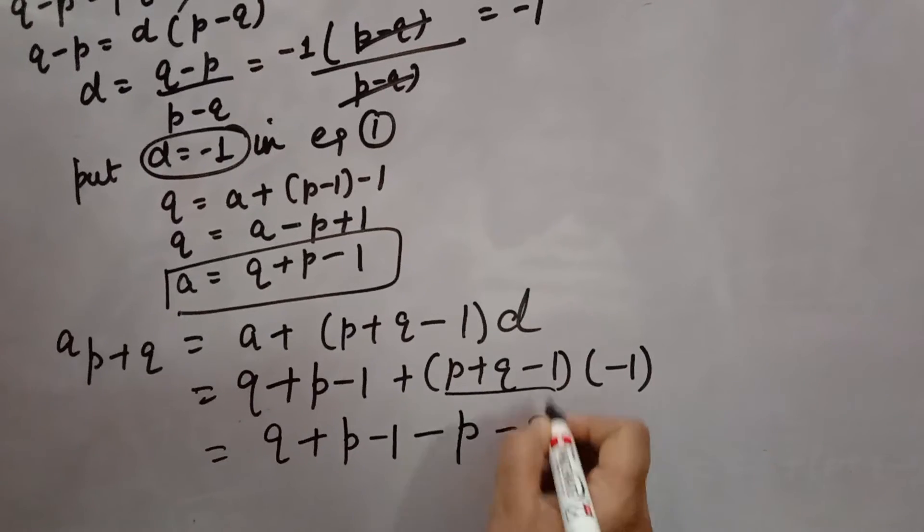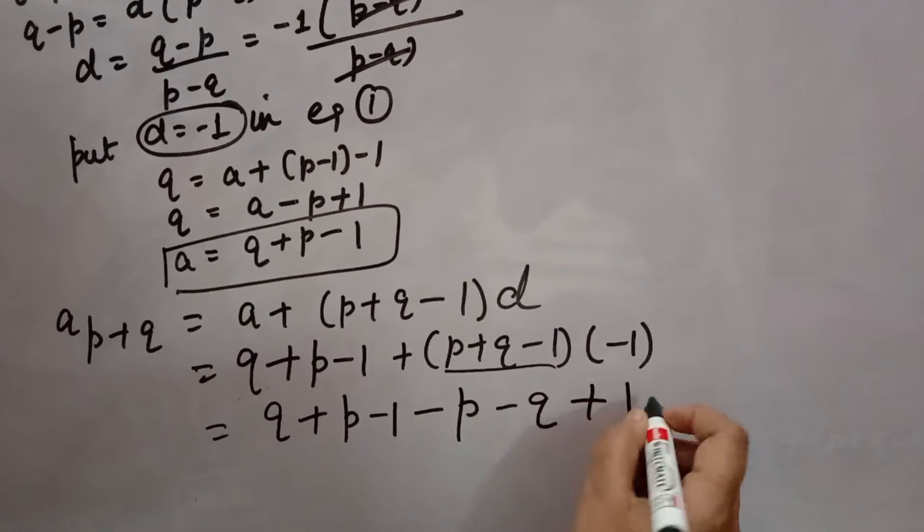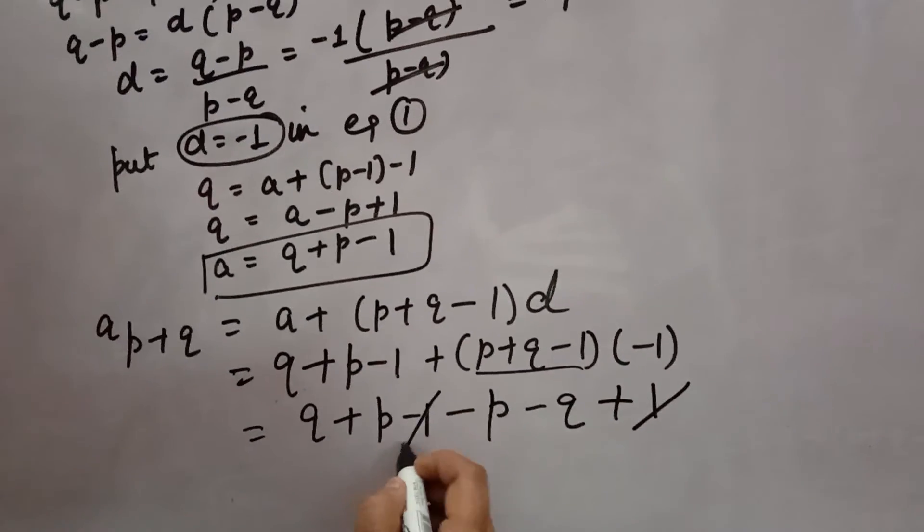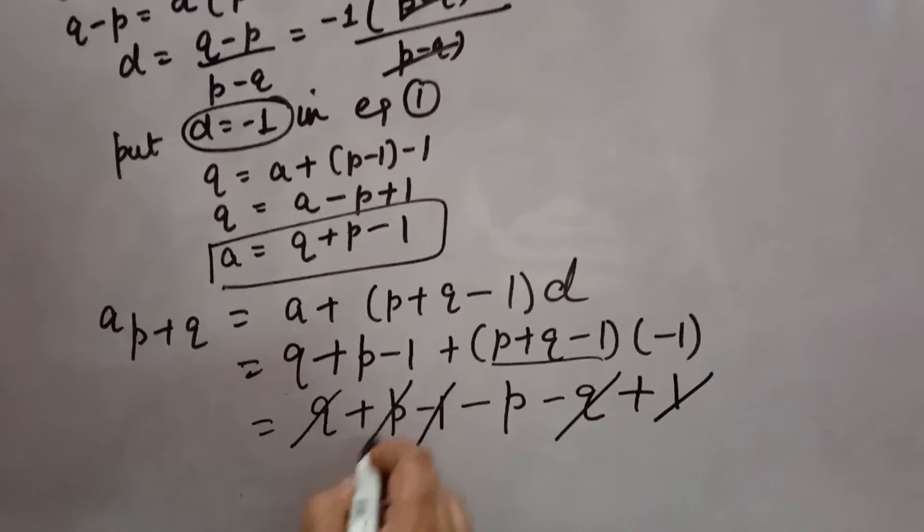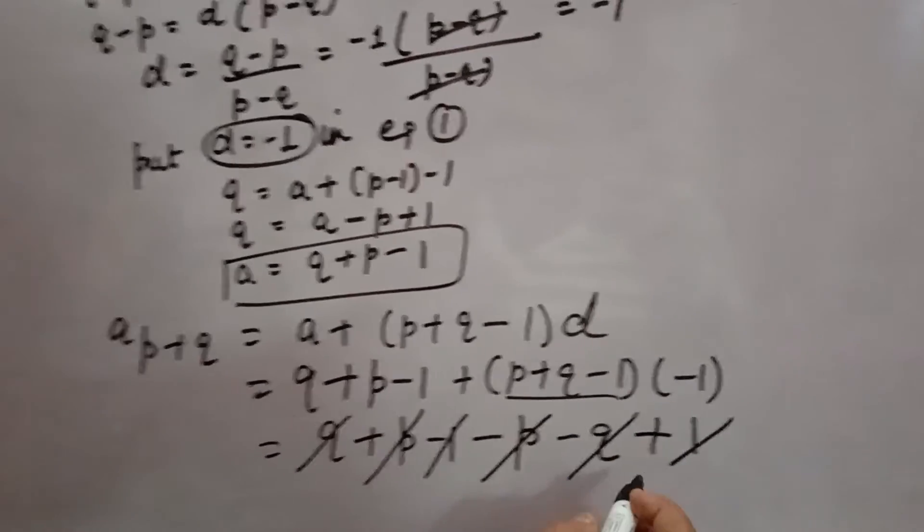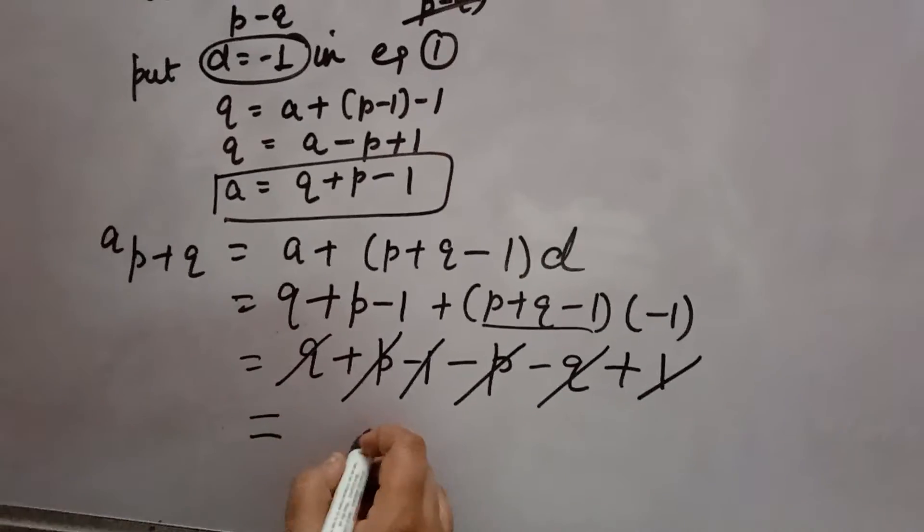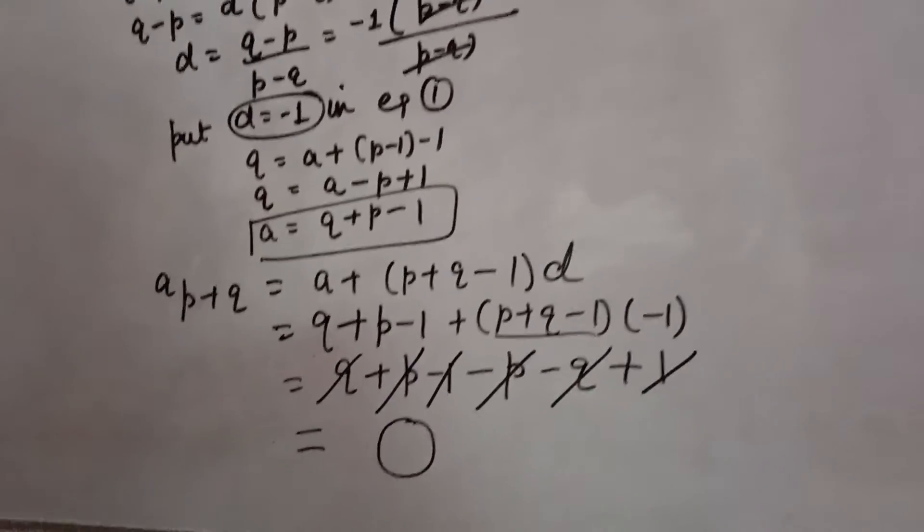Now +1 and -1 cancel, +Q and -Q cancel, and +p and -p cancel. They all equal 0, so the answer is 0. Hence proved.